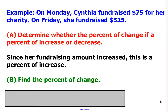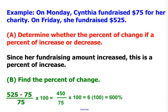Now let's actually find the percent of change. Following the formula: new amount minus old amount, divided by old amount, multiplied by 100. Finding the difference gives $450 divided by 75, which equals 6. Multiply that by 100, so her percent of increase is 600%.